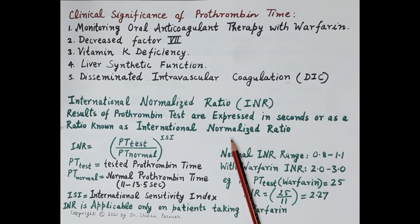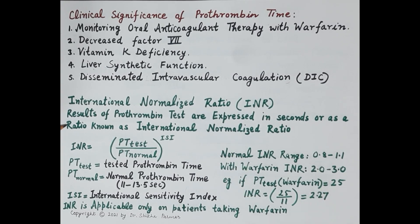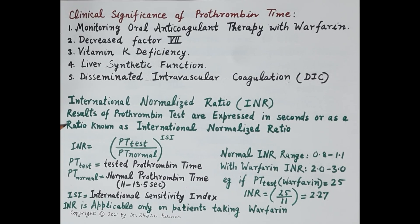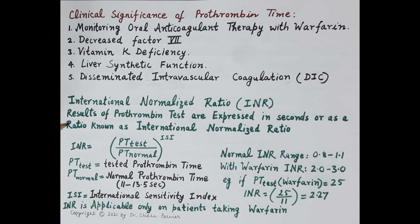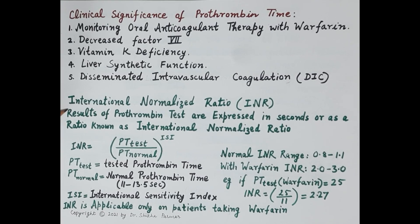The results of prothrombin time vary from lab to lab due to variations in the quality of thromboplastin — the reagent — and the different devices used. In order to standardize results across different laboratories worldwide, the World Health Organization recommends the use of INR, the international normalized ratio.